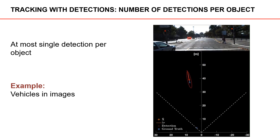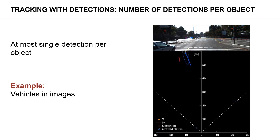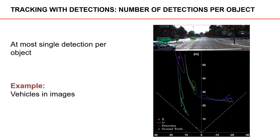Let's go back to tracking with detections and focus on the number of detections we get per object, revisiting the vehicle tracking using images example. As seen in the video clip, there are several cars in the image and we get at most one detection per car. Some cars are not detected — for example, the one in the bottom left. Cars in the far distance are not detected until they come closer to the camera. So in this example we had either no detection or one detection per car.